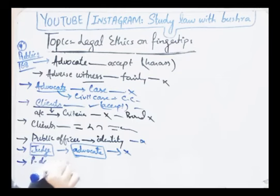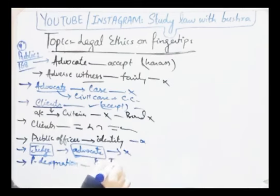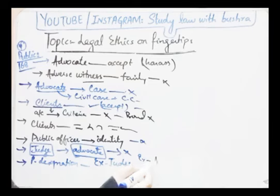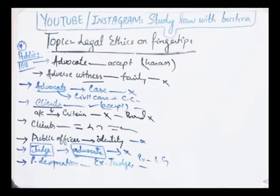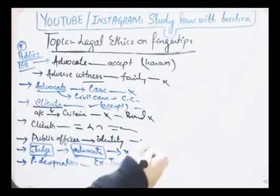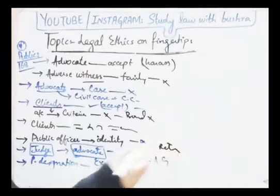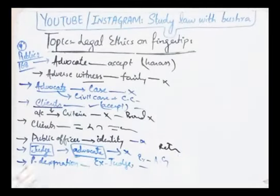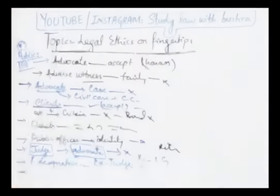Agla rule: 'No advocate will use his previous designation and post such as retired/ex-judge.' Agar ek judge hai, woh retired ho chuka hai aur dubara practice start kar di hai, to ab woh apne naam ke saath apna previous designation use nahi karega. Yani aap ye nahi likh sakte: 'Retired Justice,' 'Ex-Judge,' 'Retired General,' 'Ex-Attorney General,' 'Ex-Advocate General' — aisi koi bhi cheez aap na to apne naam ke saath use kar sakte ho, na apne visiting cards par, na apne office ke baahar board par.